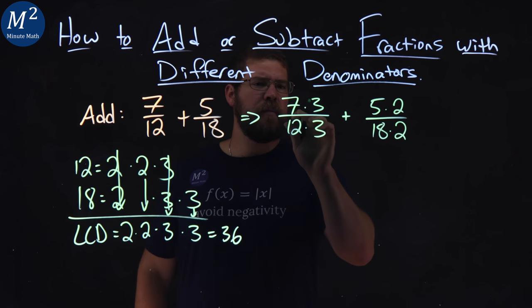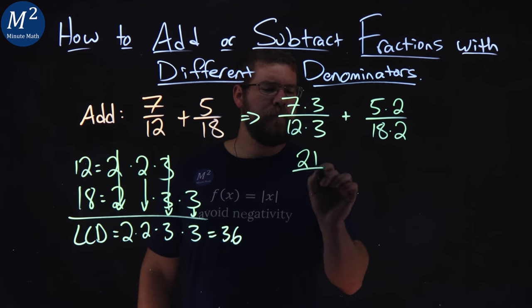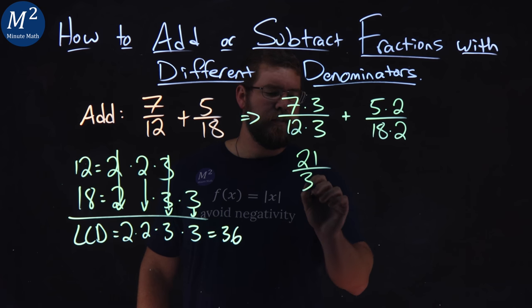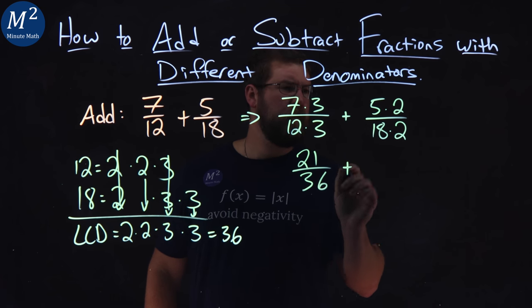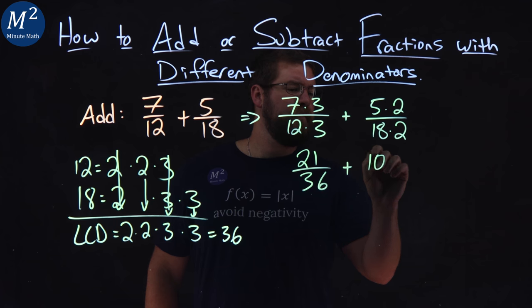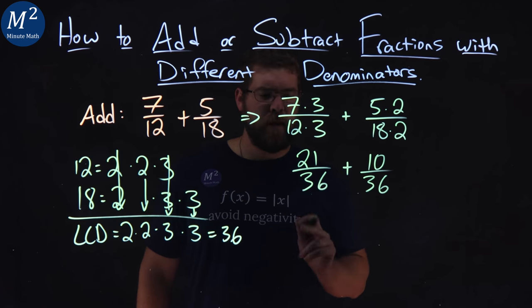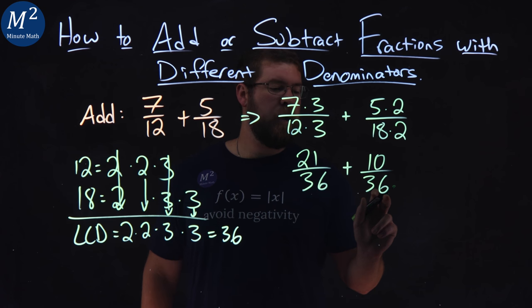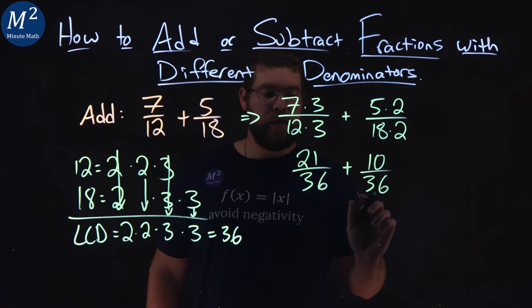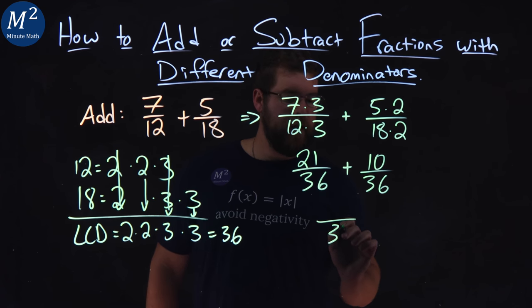From there, let's simplify some. 7 times 3 is 21, and 12 times 3 is 36, the way we designed it. 5 times 2 is 10, 18 times 2, 36 again. Notice we have a common denominator right here, 36. We can combine it to be one big fraction.